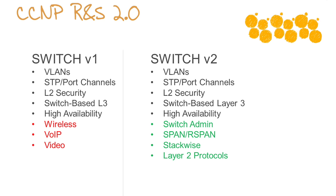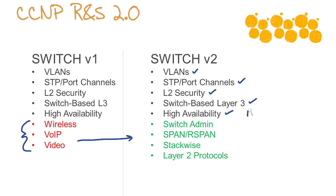Next up, it's our Switch course and exam. With Switch version 1, one of the interesting things was Cisco decided this is where they were going to give some coverage to wireless, voice over IP, and video technologies. You can see they changed their mind. So we've got VLANs including trunking, spanning tree protocol and port channels, layer 2 security, switch-based layer 3, and high availability — things like HSRP, GLBP, and VRRP.